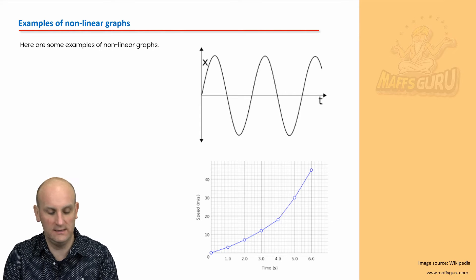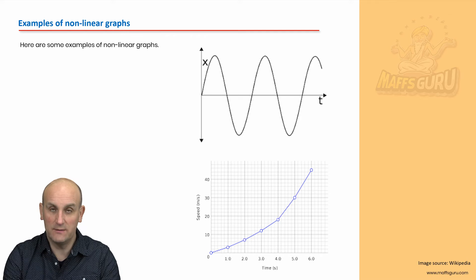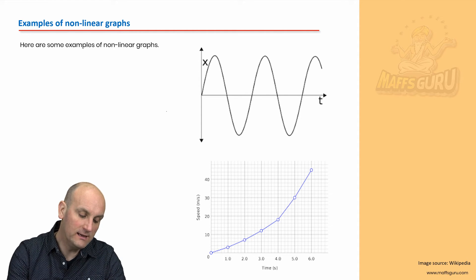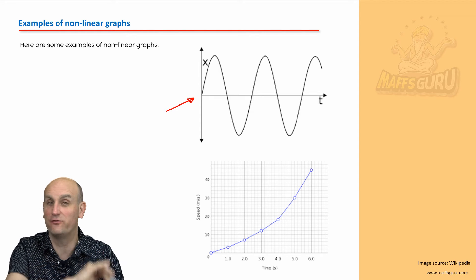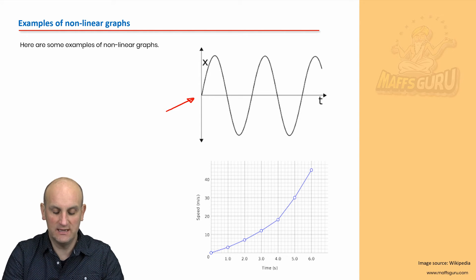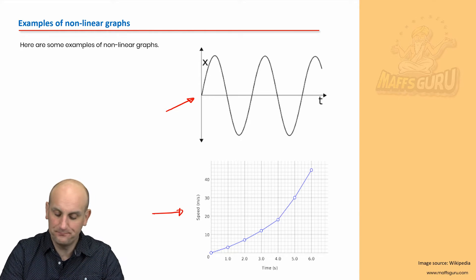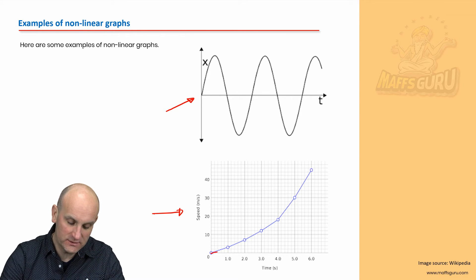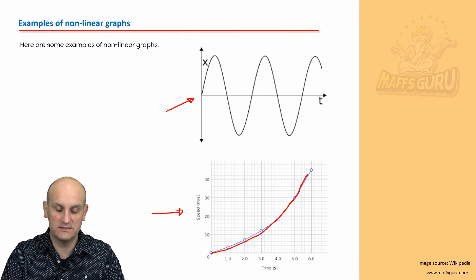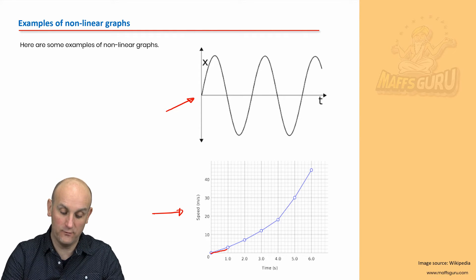Here are some examples of some non-linear graphs. Here is very much a graph that is non-linear — it seems to be wobbling up and down, there are no straight lines anywhere. And this example here from a previous lesson: it looks linear, but actually if I was to join all of these points together, I actually have a nice smooth curve.